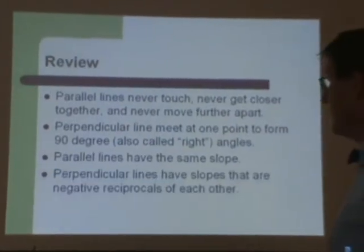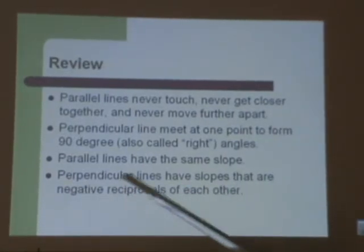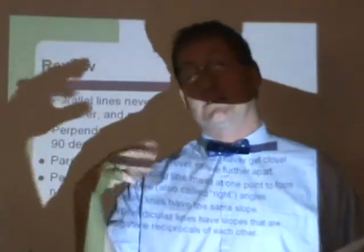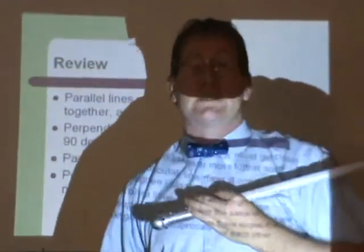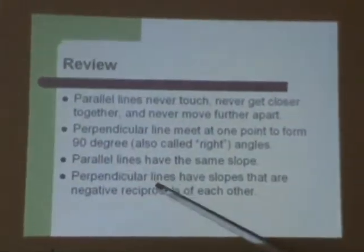Perpendicular lines have slopes that are negative reciprocals of each other. That is, you turn that slope into a fraction if it's not already a fraction. You flip that fraction over. That gives you reciprocal. Then you slap a negative sign on it if it didn't have one, or you take a negative sign away if it does have one. That gives you the negative. So then you have a negative reciprocal slope, which gives you a perpendicular.